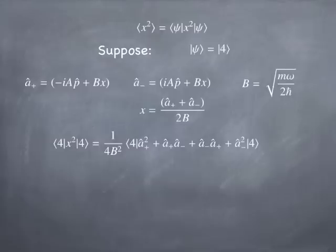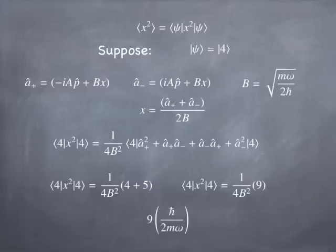And by the commutator of a plus and a minus, you know that a minus, a plus is just a plus, a minus, plus 1. So that's going to be the n plus 1 operator. That's going to give you a 5. So when the smoke clears, all that stuff does is give you 4 plus 5, or 9, which means the final result is just 9 times the h-bar over m-omega. Of course, you may remember that h-bar over m-omega is the square of the oscillator length. So this is really 9 times the oscillator length squared divided by 2.